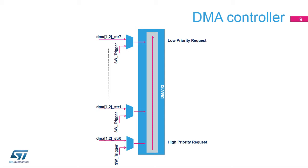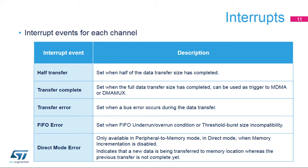Each DMA stream is designed with this group of interrupt events. The half-transfer interrupt flag is set when half the data has been transferred. The transfer-complete flag is set when the transfer is complete. The transfer-error flag is set when an error occurs during data transfer. The FIFO error flag is set whenever a DMA FIFO underrun or overrun condition is detected, or due to threshold burst size incompatibility. The direct-mode error flag is set in peripheral-to-memory mode in direct mode when memory incrementation is disabled, indicating that new data is being transferred to a memory location whereas the previous transfer is not yet complete.